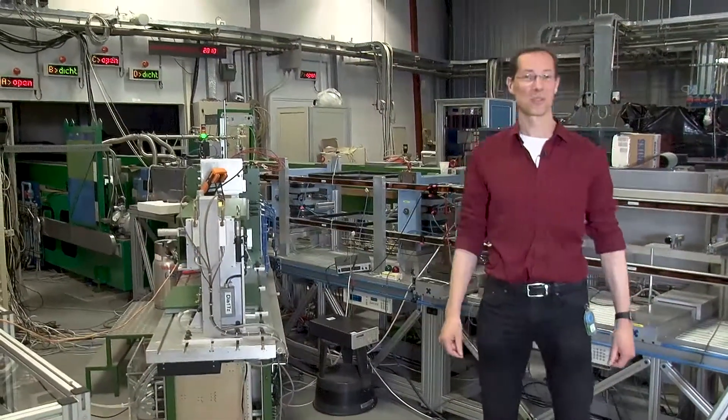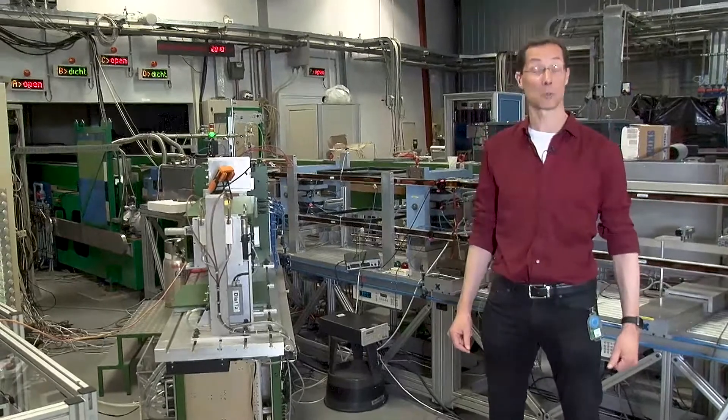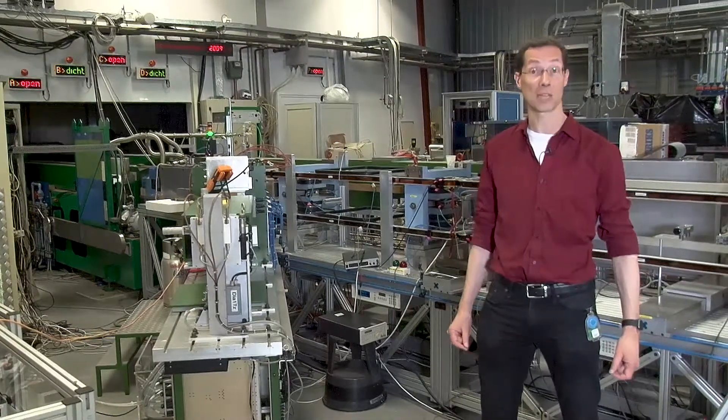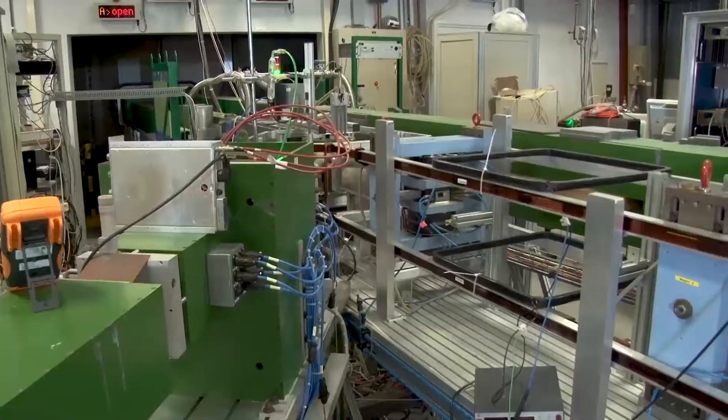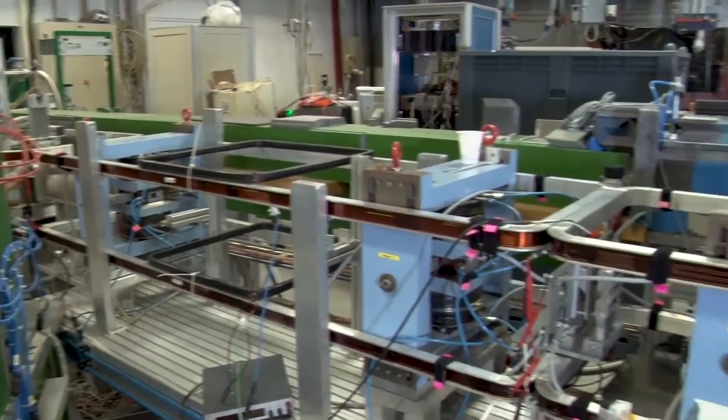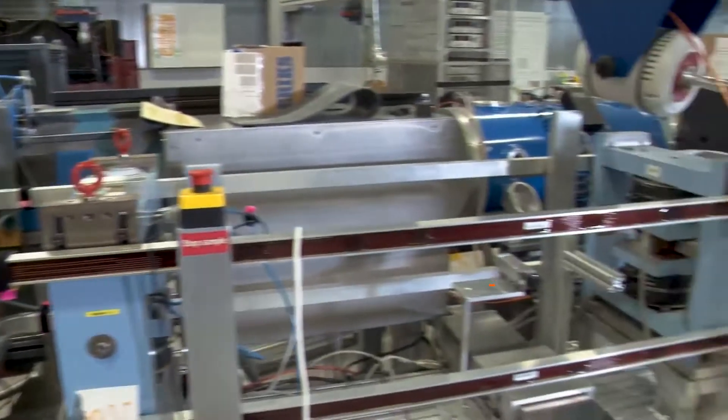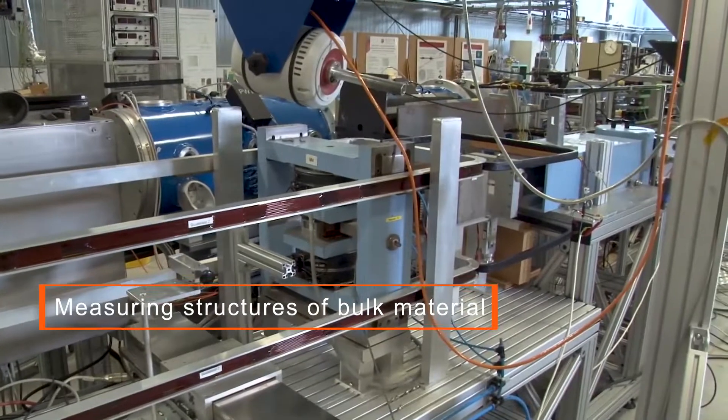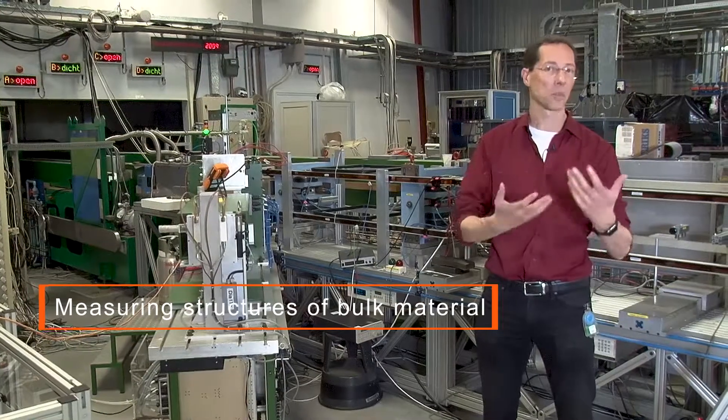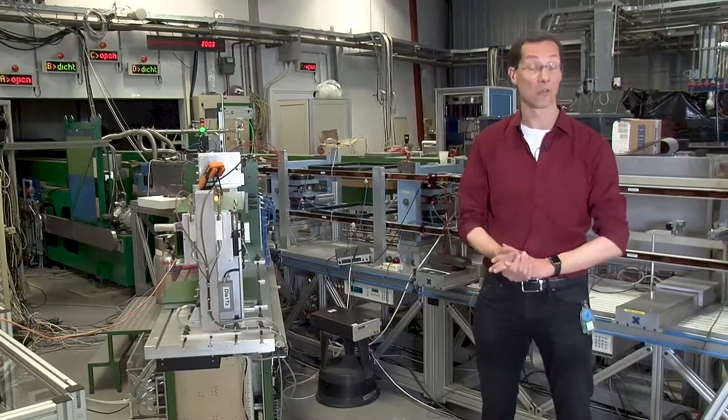We are standing here in front of the SESANS, the Spin-Echo Small Angle Neutron Scattering Instrument. With this instrument we can measure the structure of the bulk of materials on the length scales of something like a micrometer, the thousands of a millimeter.